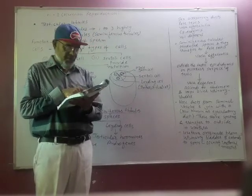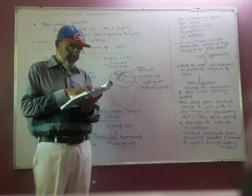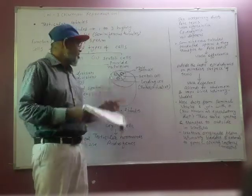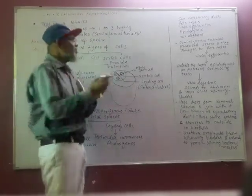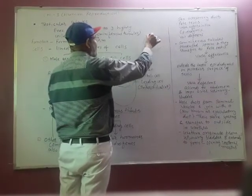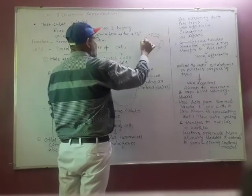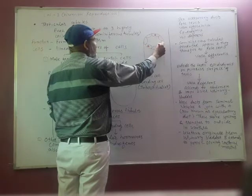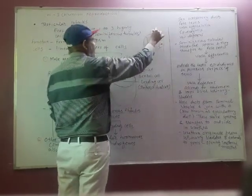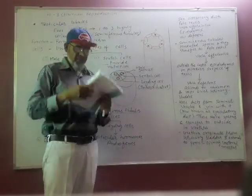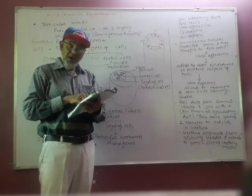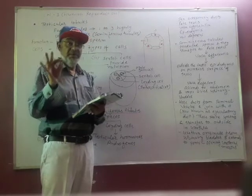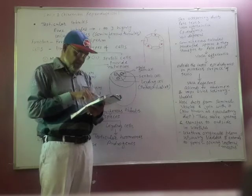In these tubules, sperm are produced. What is the function of these seminiferous tubules? These tubules produce sperm. The seminiferous tubules are lined by two types of cells: male germ cells and Sertoli cells. The cells present in the seminiferous tubules which produce sperm are known as the spermatogonia.